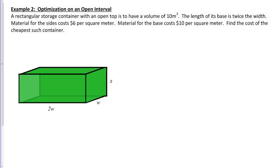Let's work through the following optimization problem together. A rectangular storage container with an open top is to have a volume of 10 cubic meters. The length of its base is twice the width. Material for the sides costs $6 per square meter, and material for the base costs $10 per square meter. Find the cost of the cheapest such container. We know this is an optimization problem because we're trying to minimize the cost function for this container.